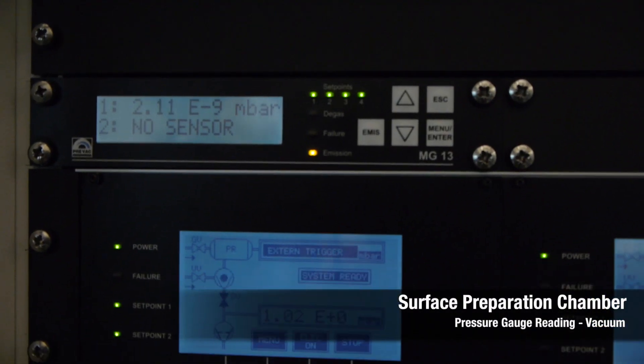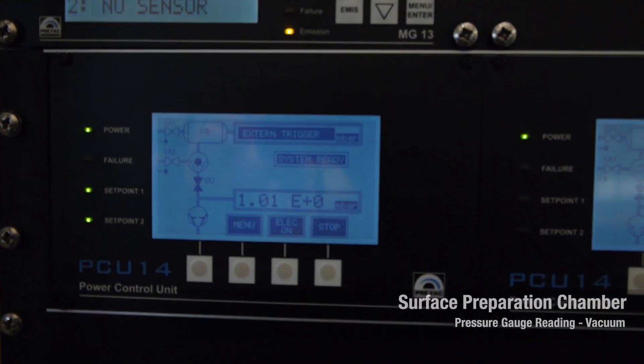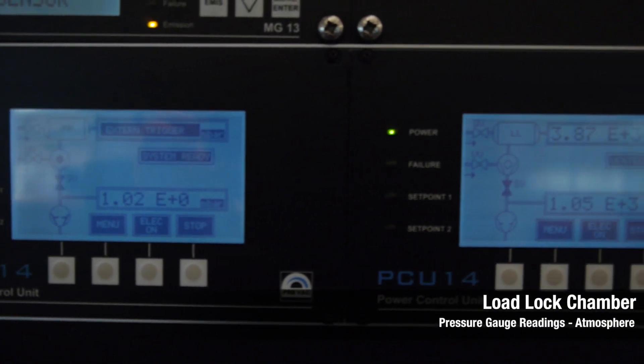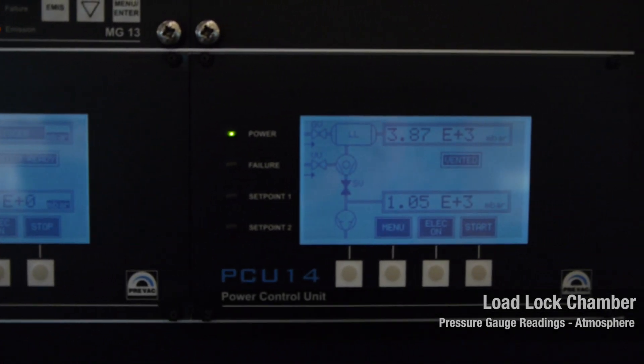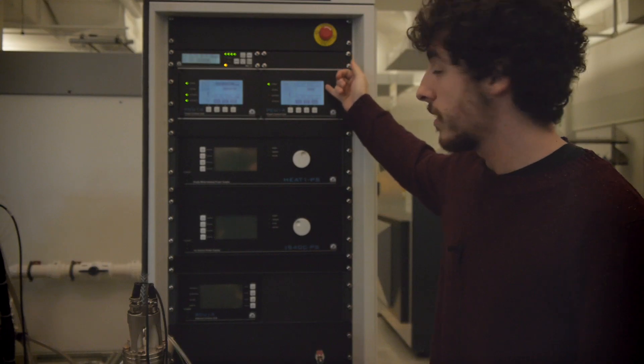Here we see the pressure for our preparation chamber. This control unit controls the pressure and everything, and this shows the pressure in our load lock.